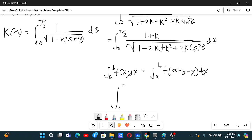And so using that, we get 1 plus k, 1 by root under 1 minus k whole square plus 4k sin square theta d theta.